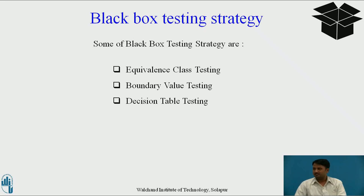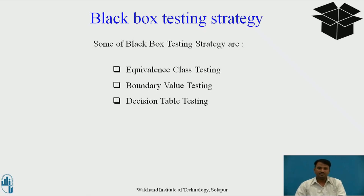Black box testing strategies: first is equivalence class testing, which minimizes the number of possible test cases to an optimum level while maintaining reasonable test coverage. Next is boundary value testing, which determines whether a certain range of values is acceptable by the system — mostly suitable for systems where input is within certain ranges. Third is decision table testing, which puts causes and their effects in a matrix with a unique combination in each column.